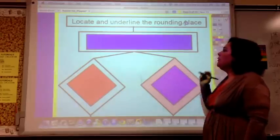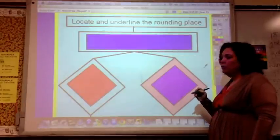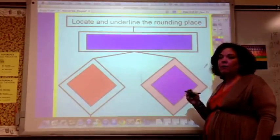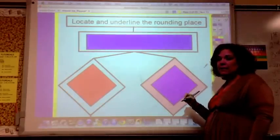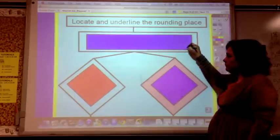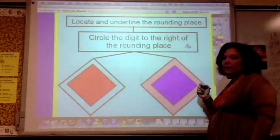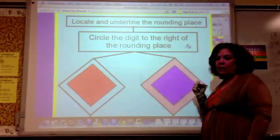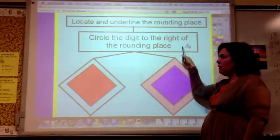In the top, you're going to write locate and underline the rounding place. It's going to tell you in the problem what the rounding place is. So if it says round to the nearest tenth, you're going to underline the tenths place. The next step is to circle the digit to the right of the rounding place. So if you're rounding to the nearest tenth, you would underline the tenth here, and then you would circle the hundredth to the right.